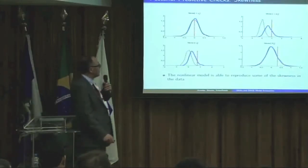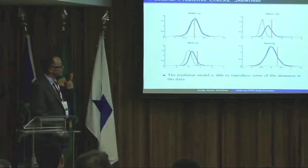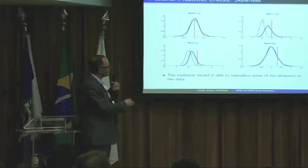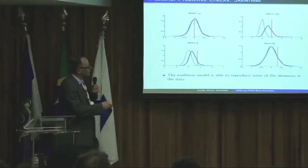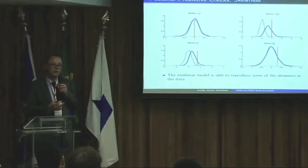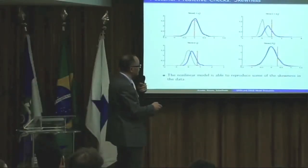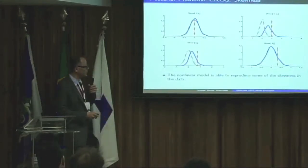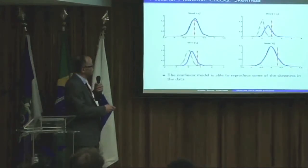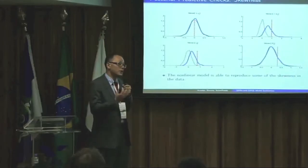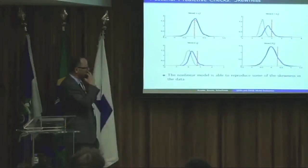Now let's try something nonlinear: skewness. We compute the skewness in inflation rates and nominal wage growth. It's noticeable in the actual data. The linear model is dead in the water here because it's driven by Gaussian shocks — nothing is happening. But at least the estimated nonlinear model is able to capture some of the skewness in wages and some of the skewness in inflation. So the nonlinear model is able to capture some of the nonlinearities that we seem to see in the data.